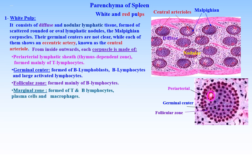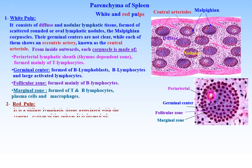Marginal zone. Formed of T and B lymphocytes, plasma cells, and macrophages.